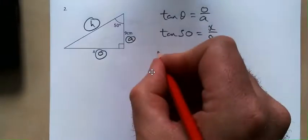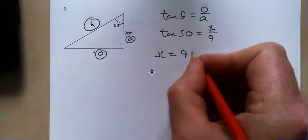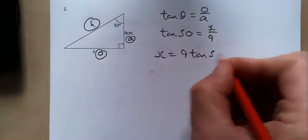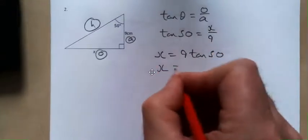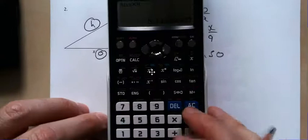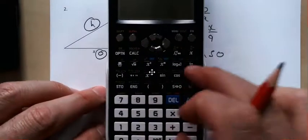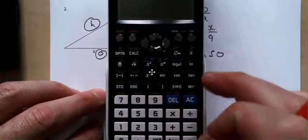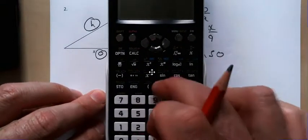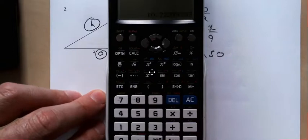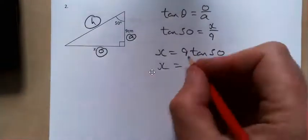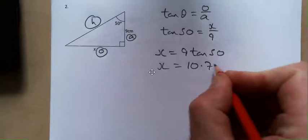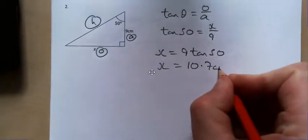And I'm just going to rearrange this. I hope you'll follow it. x then equals 9 tan 50. I'm sure the calculator can figure this out for us but if we go 9 times tan 50 it gives us 10.7. And that's in centimeters.